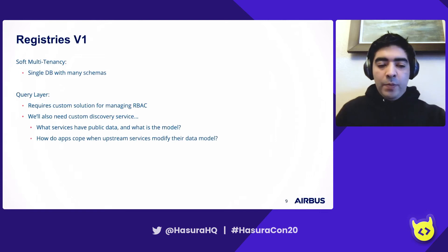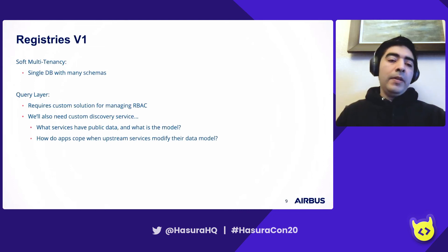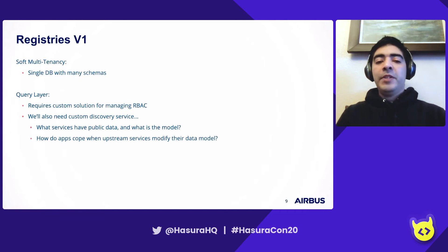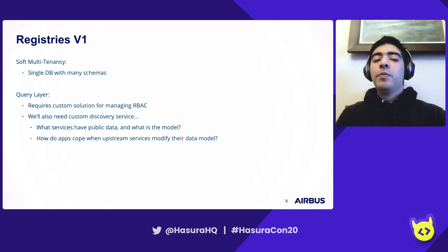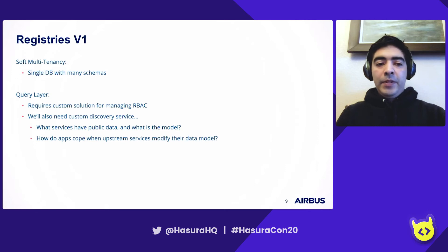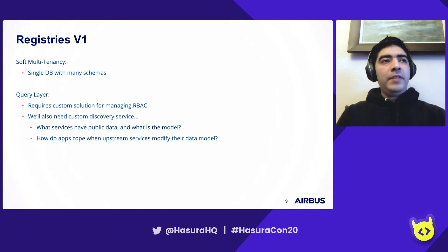One of the requirements is that we support many services, which implies a form of multi-tenancy. One way to do that with Postgres is soft multi-tenancy — you can have a single database with multiple schemas, where the schemas correspond to the individual services. This allows us to do joins out of the box, which harder forms of multi-tenancy would require more work for. Some questions arise around the query layer: we would need a custom solution for RBAC, and also a custom discovery service so new services can discover what data is available from existing services.